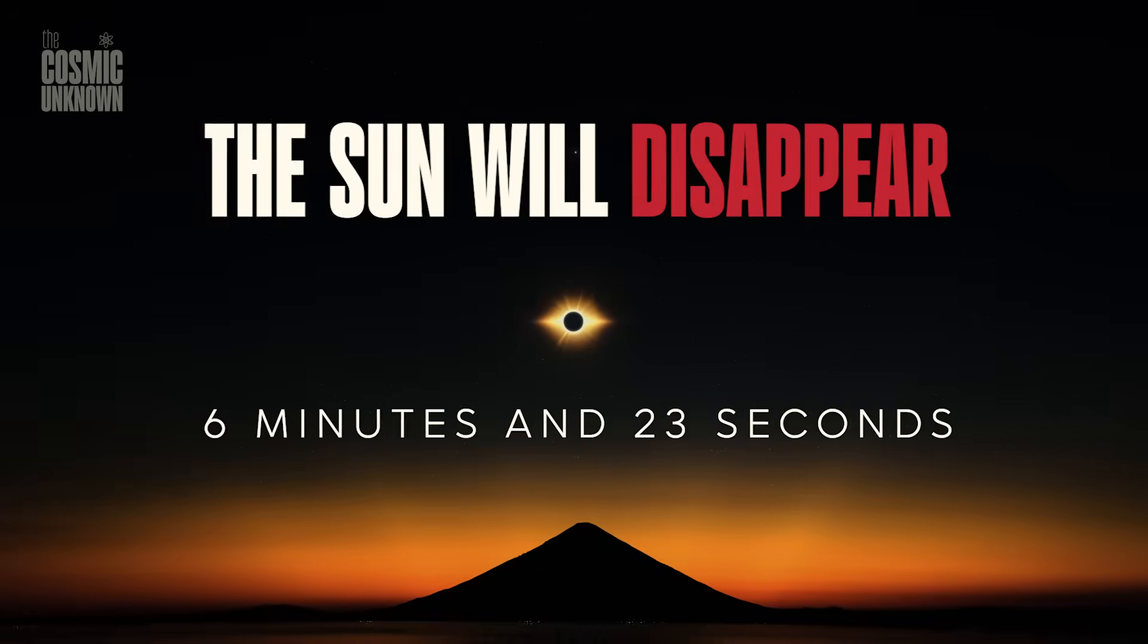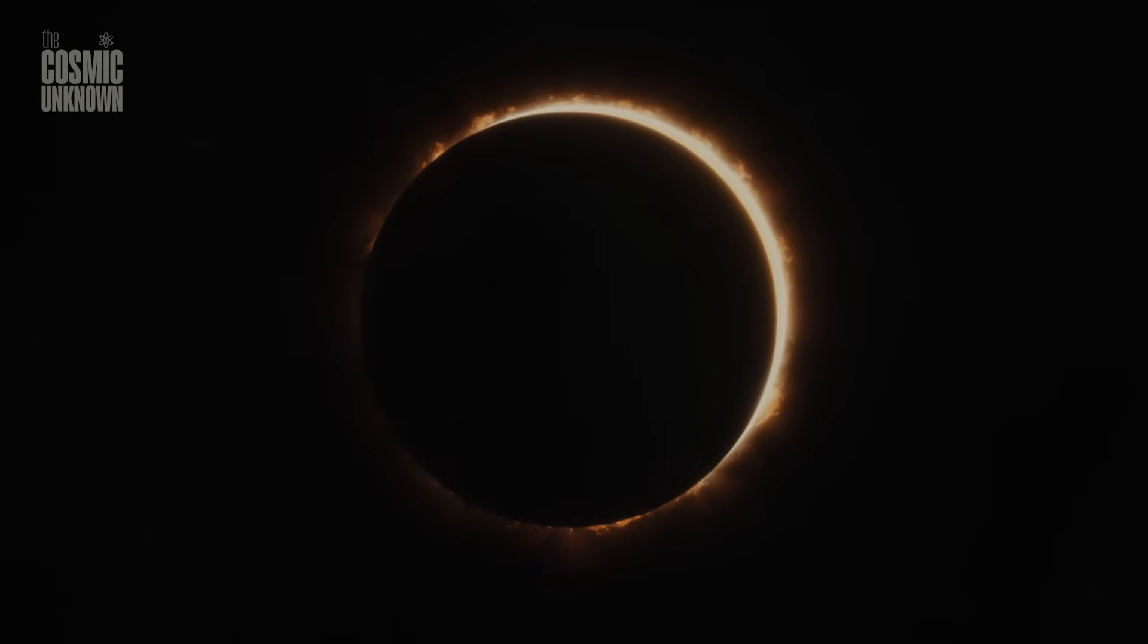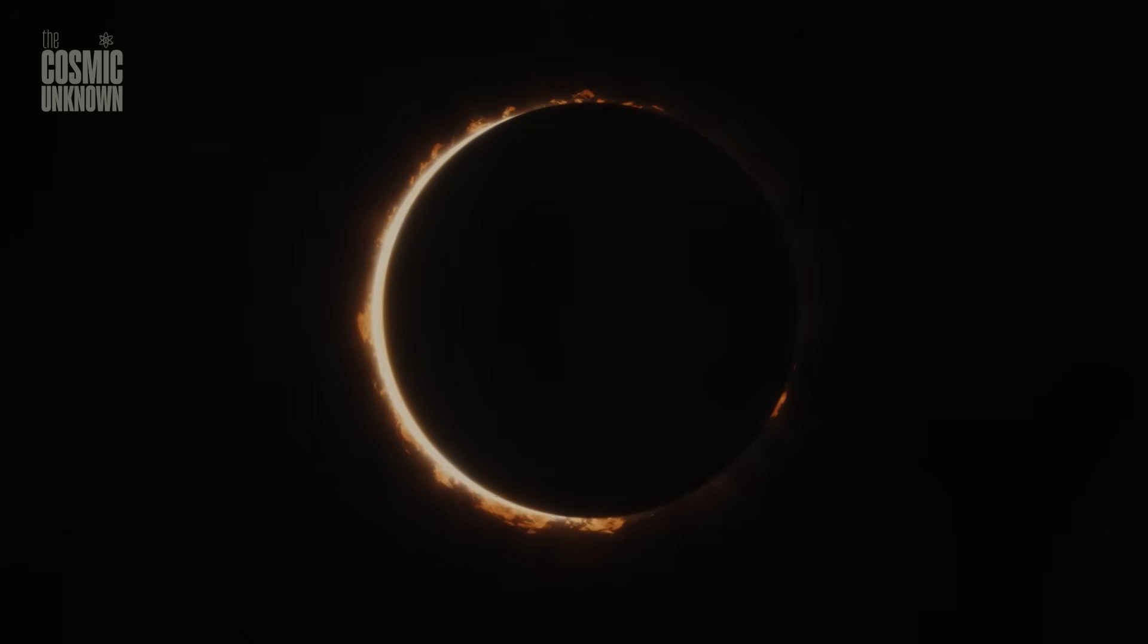And then, for 6 minutes and 23 seconds, the sun will disappear. Not behind clouds. Not into the horizon. It will vanish. Blocked entirely by the moon. A total solar eclipse.